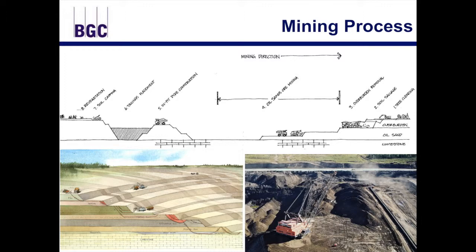Once the mine begins operation, the mining process itself involves several different stages, many of which can occur concurrently on the landscape. Typically, the process begins with tree clearing and dewatering. From there, an area of soil is salvaged for use in reclamation activities later on. Overburden is removed — in the case of the oil sands, to get to the bitumen oil-bearing McMurray formation. And then you have the extraction of the resource.